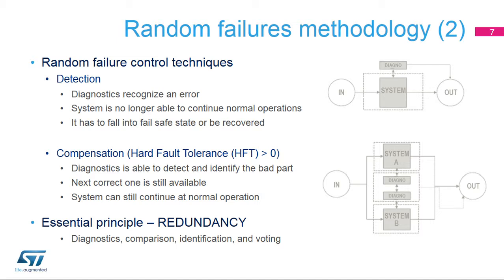Generally, a voting process is used to identify the damaged part or incorrect data, which is then replaced by the correct one. Standards recognize hard fault tolerance, or HFT, as the maximum number of errors which a system can absorb while still continuing at normal operation. In addition to specific functional testing, redundancy is the essential diagnostic principle. Both detection and compensation techniques always require a sure level of redundancy to be efficient. Compensation is considerably more demanding than detection, as not only discrepancies but the correct state has to be identified as well, requiring specific comparisons and voting mechanisms.